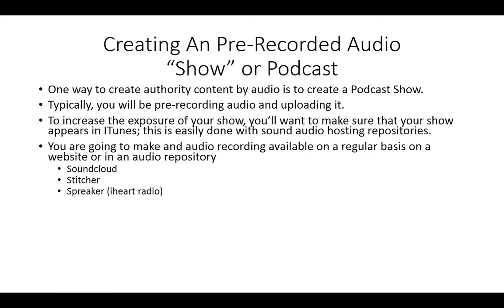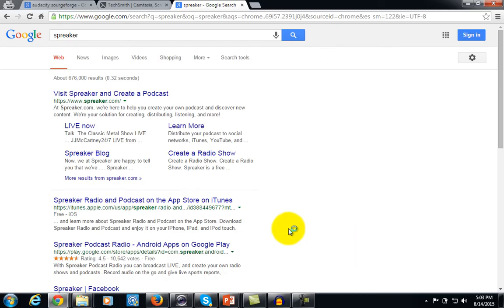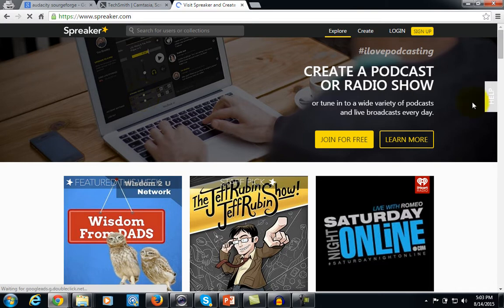Another location to put your audio is a website called Spreaker, which comes with a built-in advantage: not only does it connect to iTunes, but it also connects to iHeartRadio, which is available inside many automobiles as well as on terrestrial radio. Spreaker can be found with a simple Google search, and it is designed for you to create your own podcast or radio show. It's fairly simple to use once you already have the equipment needed to get started.